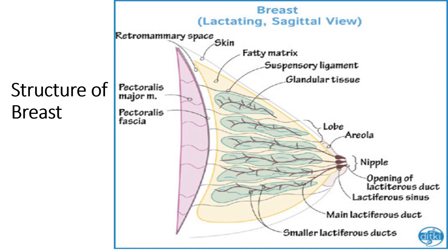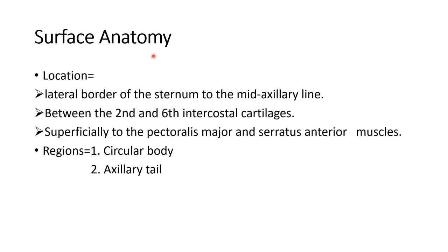For more details on this structure, see the video on breast available in this channel. Next, you have to write about the surface anatomy of breast under these subheadings. The location of breast is between the lateral border of sternum and mid-axillary line, between the 2nd and 6th intercostal cartilages. Superficially it lies over the pectoralis major and serratus anterior muscles. The regions of the breast include the circular body and the axillary tail.